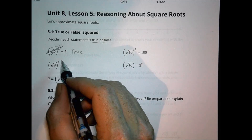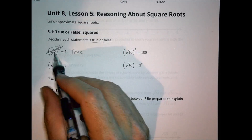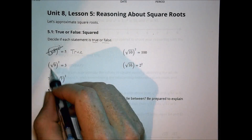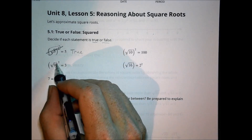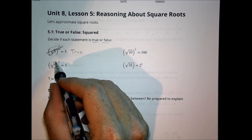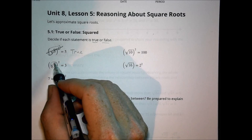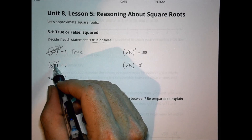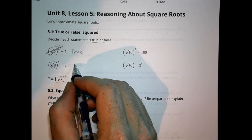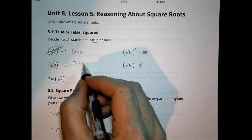The square root of 9 squared — is that going to be true or false? In this case, this would be a false statement. The reason is that the square root of 9 is actually 3, and then when you square the 3 you end up back with 9. So that's a false statement.